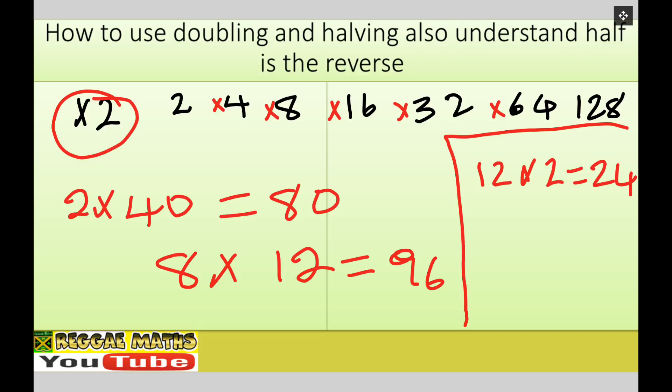So basically I've got 12 times two, right, so that's 24. Okay, and if I double again, if I double 24, that's going to give me, so I'm going to do 24 times two again, that's going to give me 48.